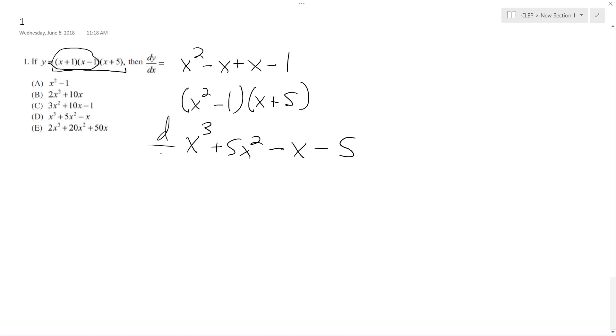Okay, so now we can take d/dx of this entire portion right here. So we pull down the 3, x³⁻¹, plus 2 times 5, x²⁻¹, and then minus 1 times x raised to the zero.